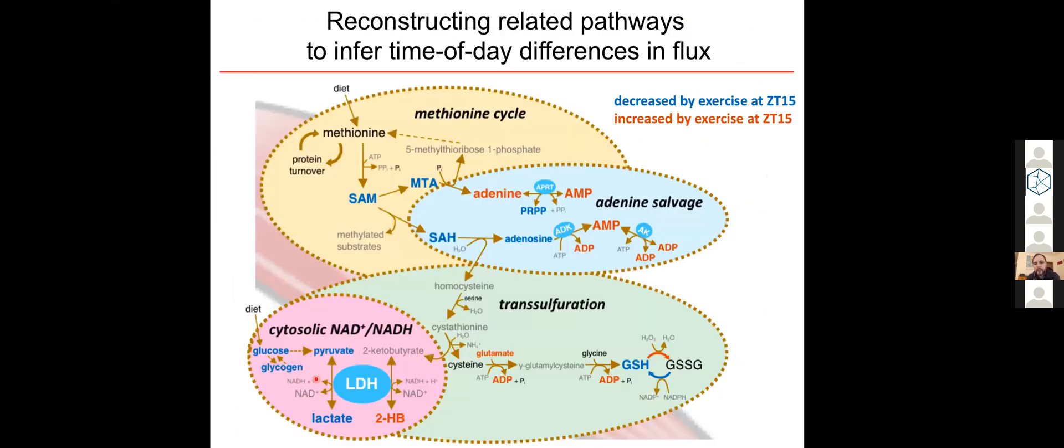We can also stratify these metabolite changes according to tissue and condition and time and reconstruct relationships across known related metabolic pathways like you see here. So if I have to make a summary slide of what our data is telling us in the muscle at least, it suggests that exercise performed at night is preferentially directing muscle methionine metabolism towards adenine nucleotide salvage and glutathione production and especially maintenance of the cytosolic redox potential.